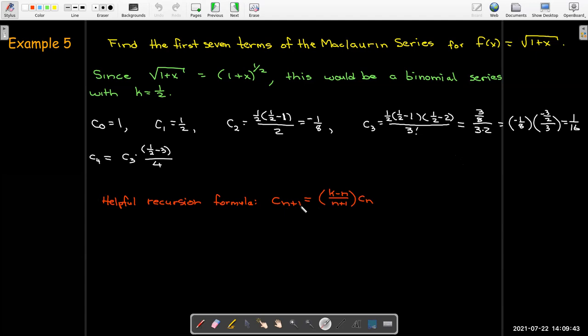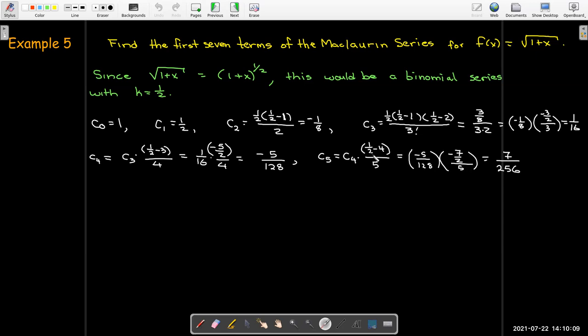So now I'm going to use that formula for the rest of my coefficients. I'm going to say that c sub 4 will be c sub 3 times 1 half minus 3 over 4. You get negative 5 over 128. c sub 5 would be c sub 4 times k minus 4 over 5. So that gives me 7 over 256. And I'm asked to find seven terms so I need one more coefficient, and that turns out to be negative 21 over 1024.